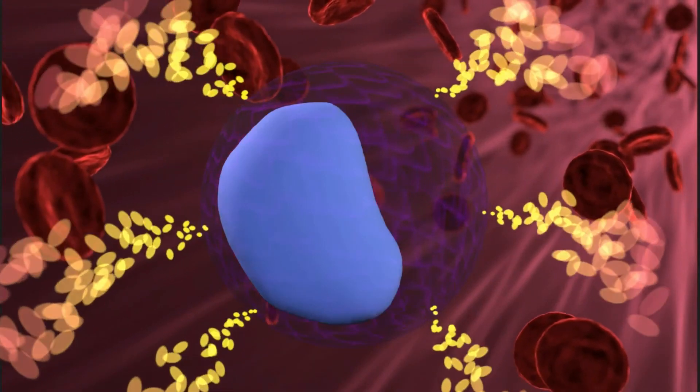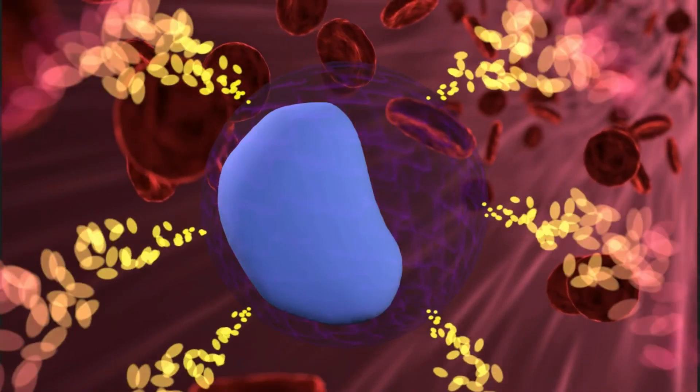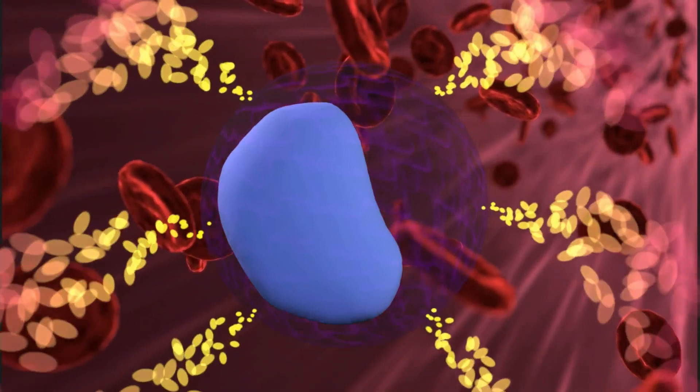After the body is free of pathogens, T suppressor cells secrete chemicals which terminate the immune response.